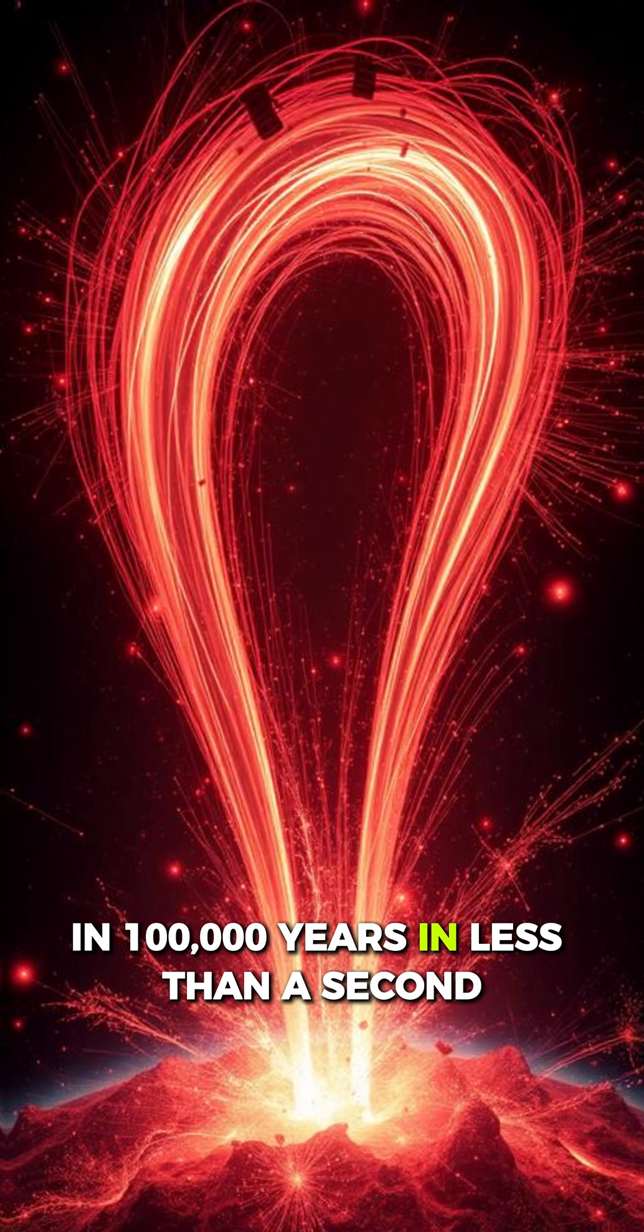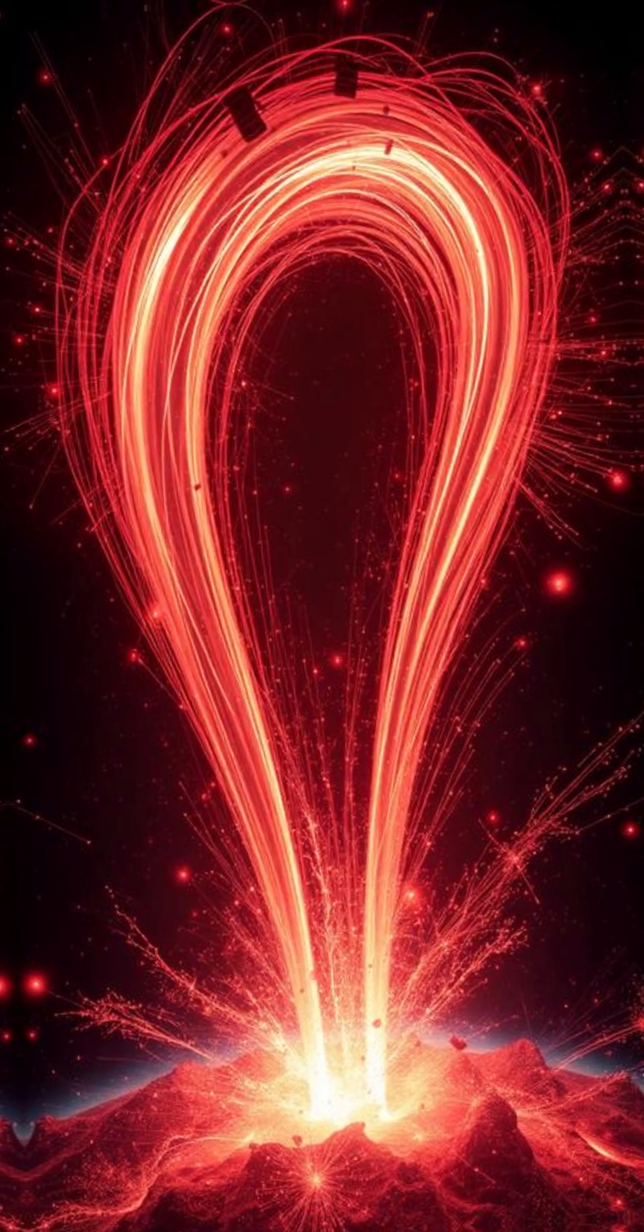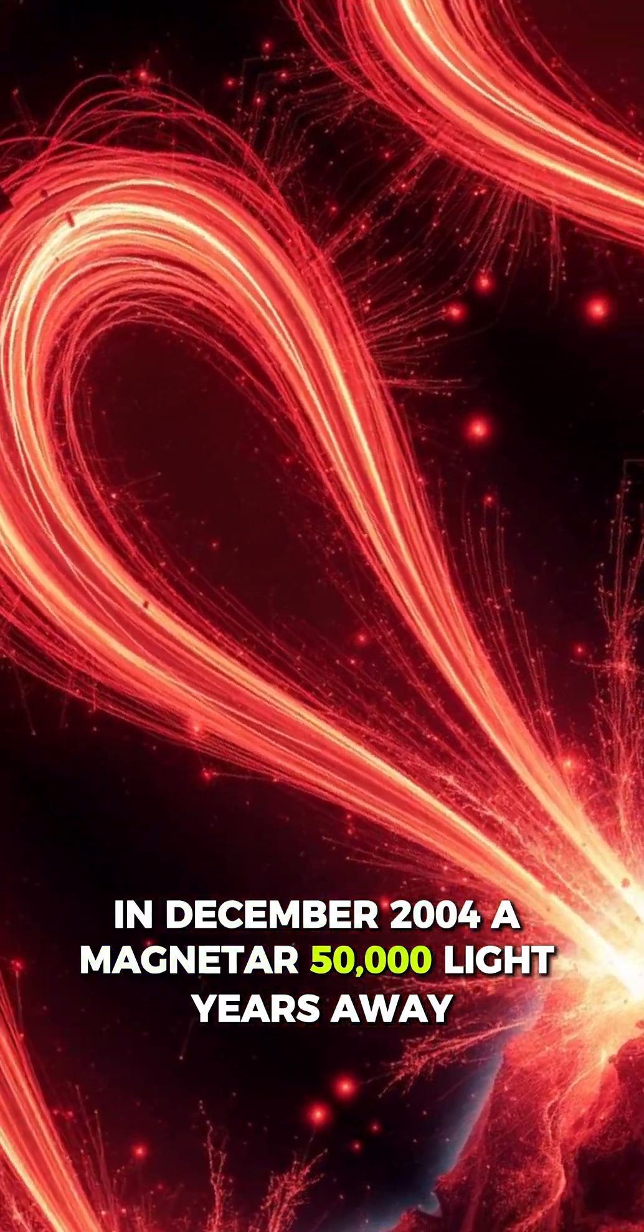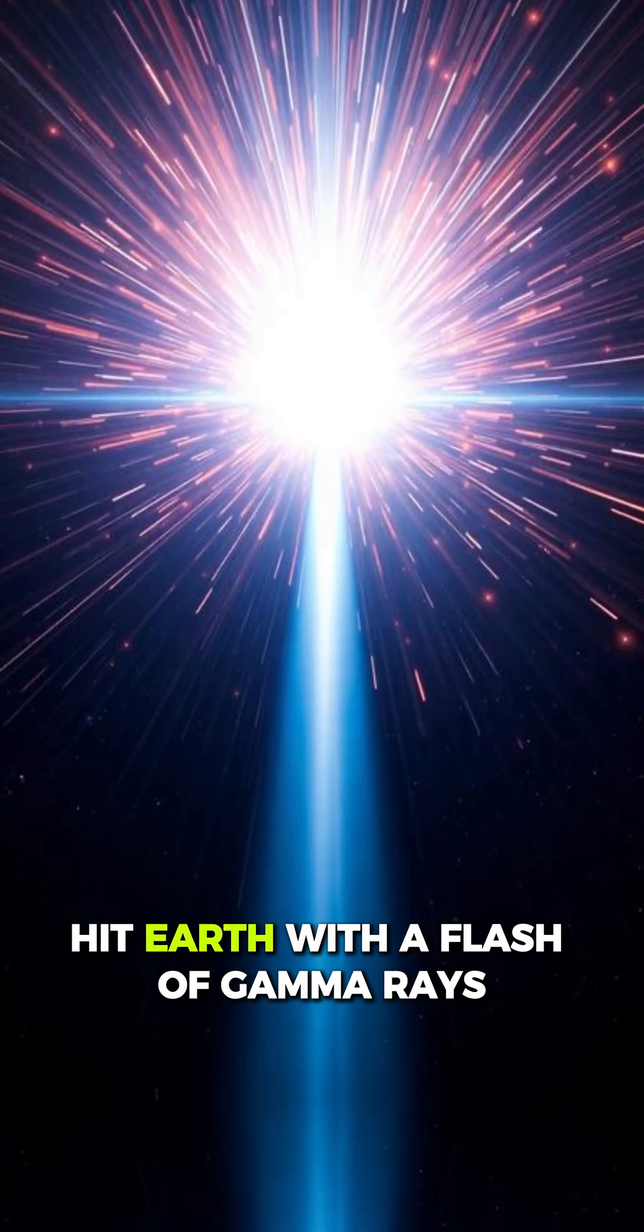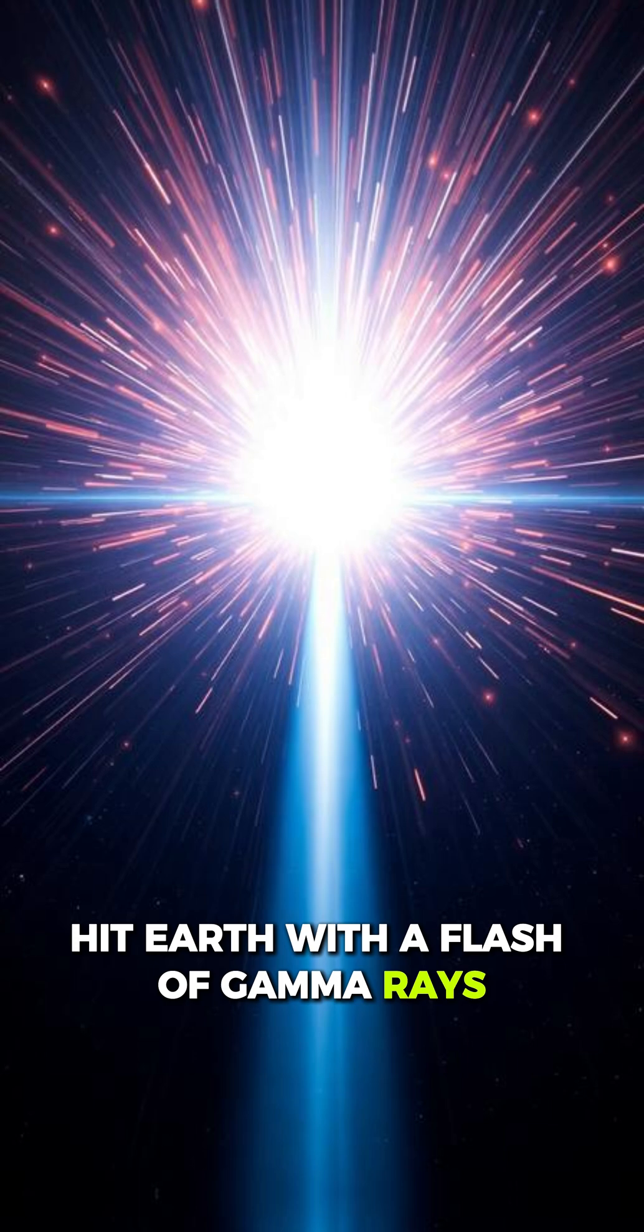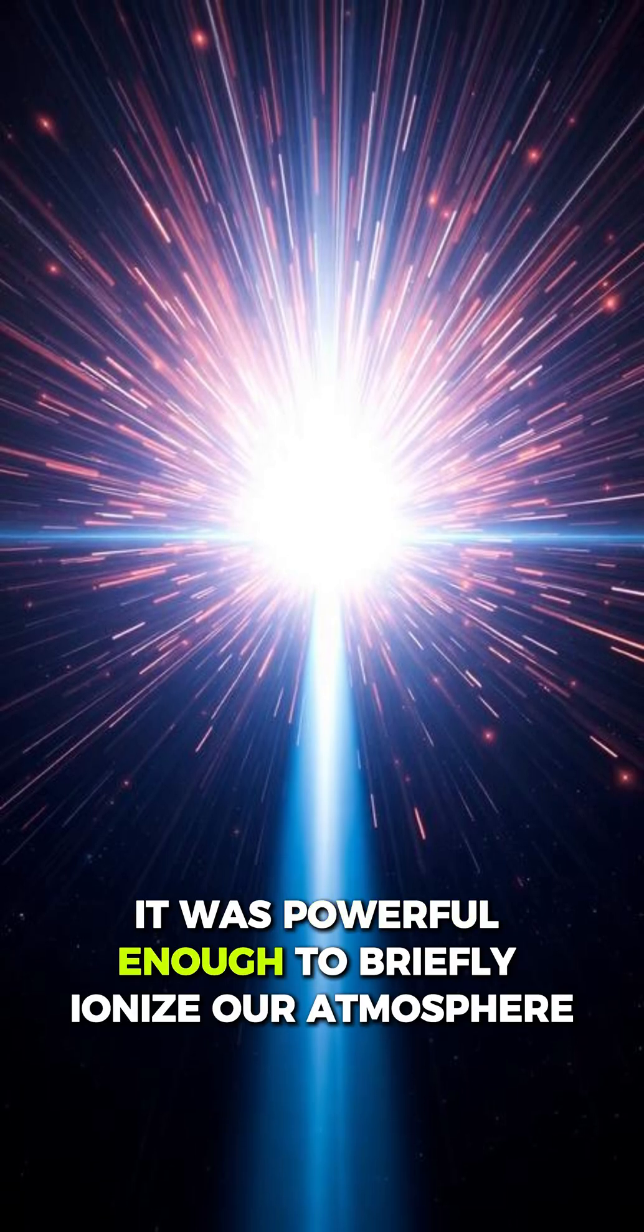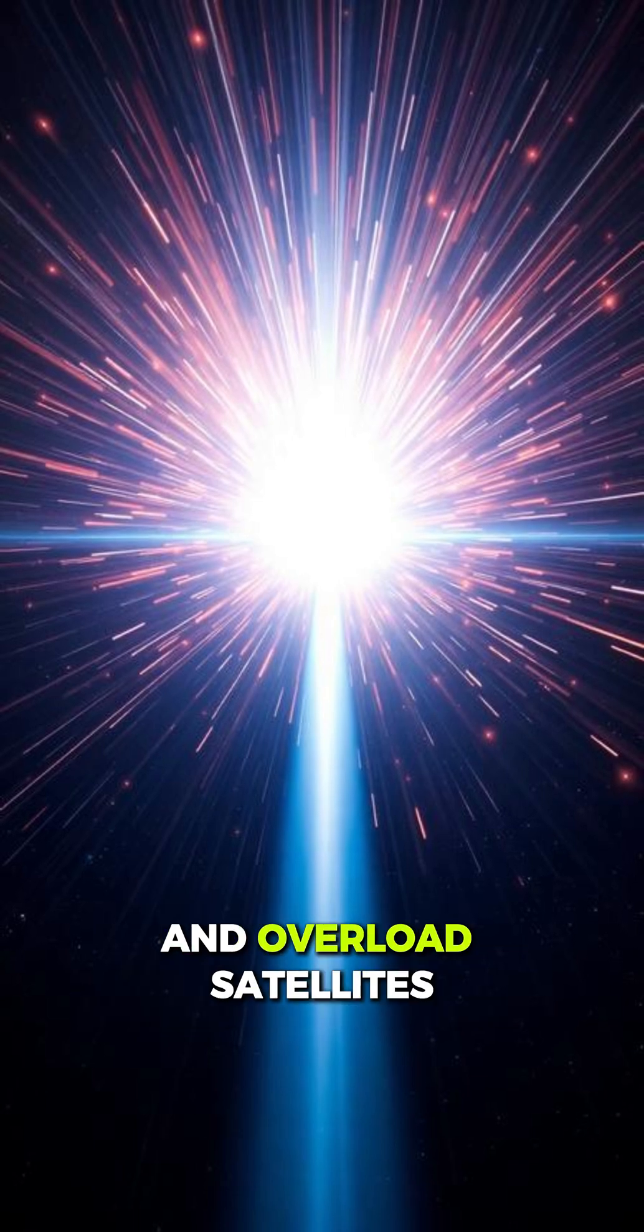In December 2004, a magnetar 50,000 light years away hit Earth with a flash of gamma rays. Even from that distance, it was powerful enough to briefly ionize our atmosphere and overload satellites.